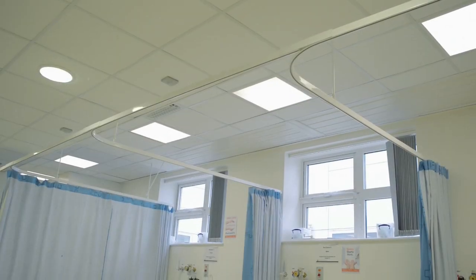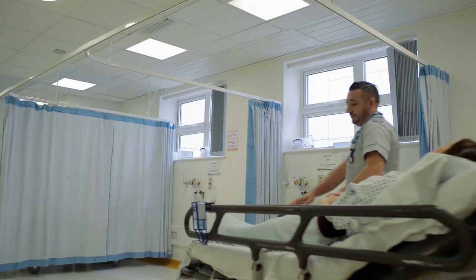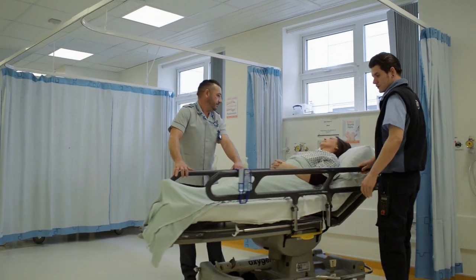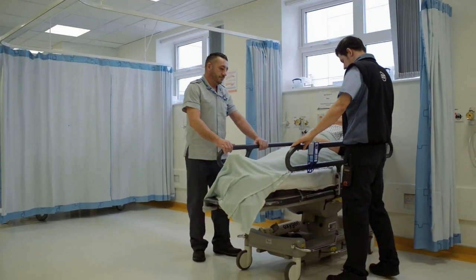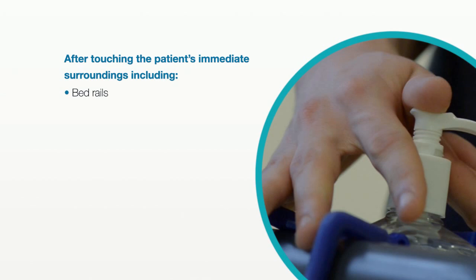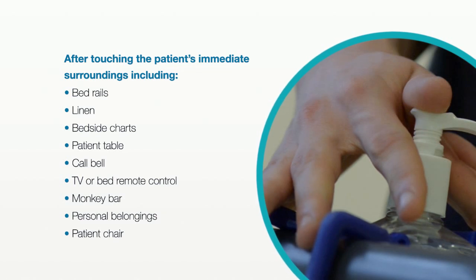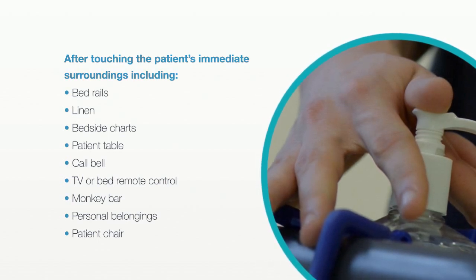The role of Moment Five is to protect yourself and the healthcare surroundings from harmful patient germs after touching the patient's environment. Moment Five refers to direct contact with the environment only. Examples include bed rails, linen, bedside charts, patient table, call bell, TV or bed remote control, monkey bar, personal belongings, and patient chair. Moment Five is often the most forgotten moment, as environmental contact is not perceived as a contamination risk.